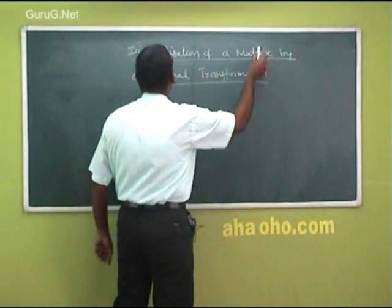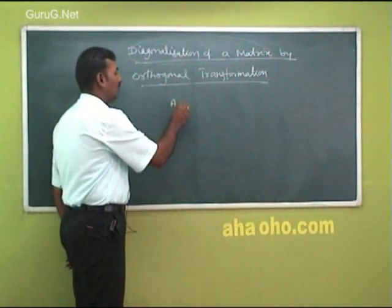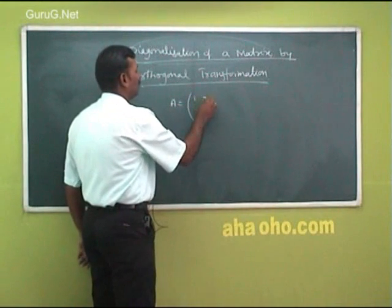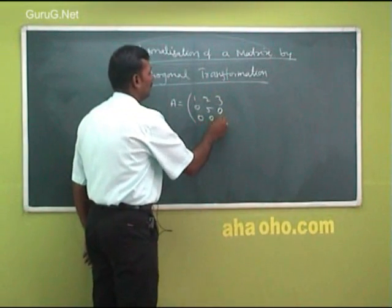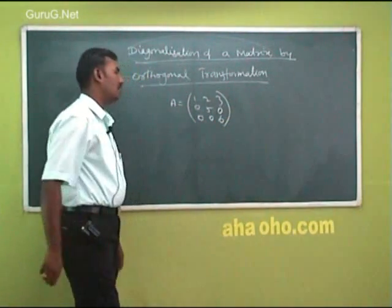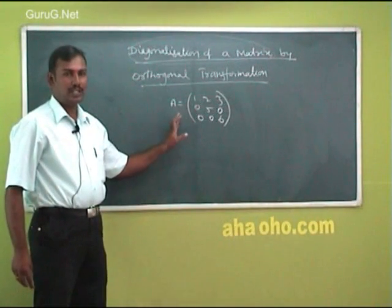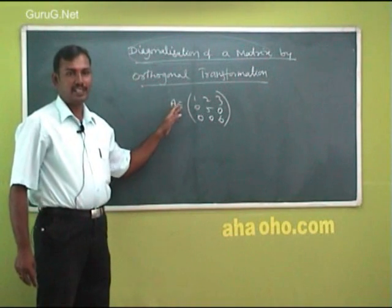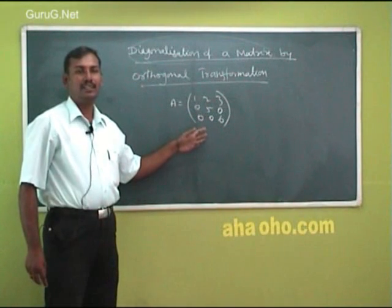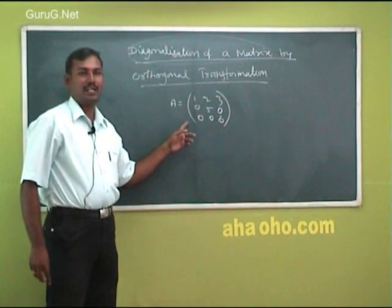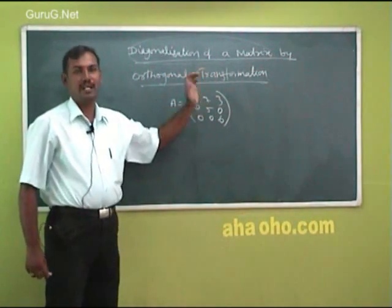So what do you mean by diagonalization of a matrix? Suppose a matrix A is given like 1, 2, 3, 0, 5, 0, 0, 0, 0. The process of converting a given matrix into a diagonal matrix whose diagonal elements are the eigenvalues of the given matrix — that process is called diagonalization of the matrix.